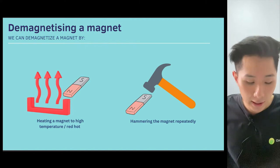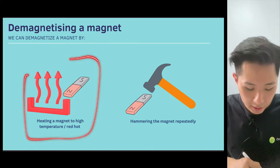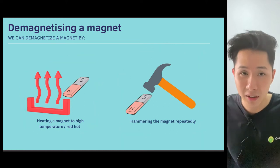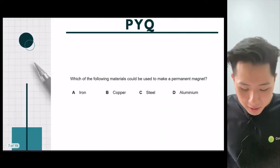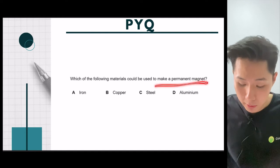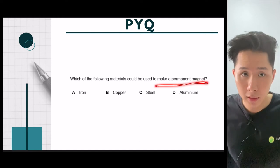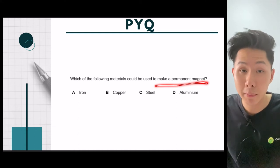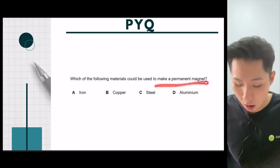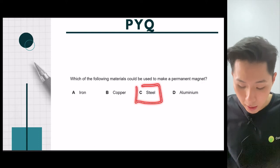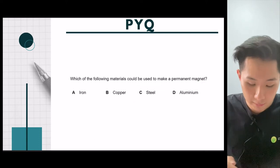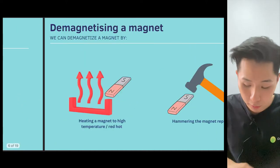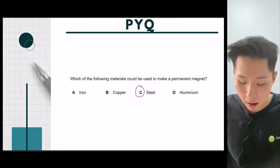There are ways that you can demagnetize a magnet — you can hit it with a hammer or any hard object. So, which of the following materials could be used to make a permanent magnet? To make a permanent magnet, I need something that would not get demagnetized very easily, meaning I need a hard magnet material. The hard magnet material here is steel.